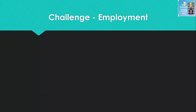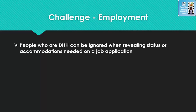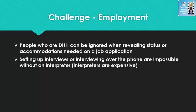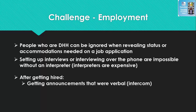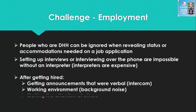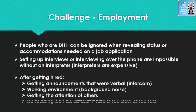The second challenge for students who are deaf or hard of hearing transitioning to adult life is employment. People who are deaf or hard of hearing can be ignored when revealing their status or accommodations needed on a job application. Therefore, many of them don't disclose, and after they receive the job they have difficulties. Setting up interviews or interviewing over the phone are nearly impossible without an interpreter, and interpreters are very expensive. Difficulties after getting hired could include getting verbal announcements such as over the intercom, the working environment including background noises and fluorescent lighting, getting the attention of others, and lip reading can be difficult if the rate of speech is too slow or too fast.